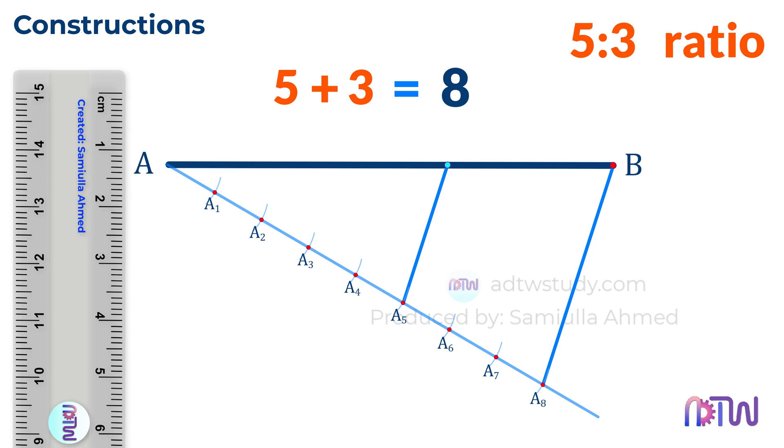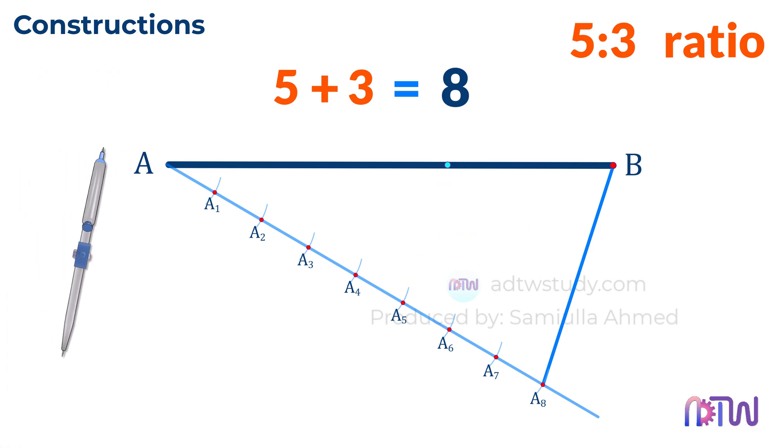Now how do you draw a line that is parallel to A8B? Here's how: take the compass, adjust it to any length, and place it at A8. Draw an arc as shown. Without changing the compass width, place it at A5 and draw another arc. Next, measure the distance between these two points where the arc intersects and replicate this same distance by placing the compass at this point.